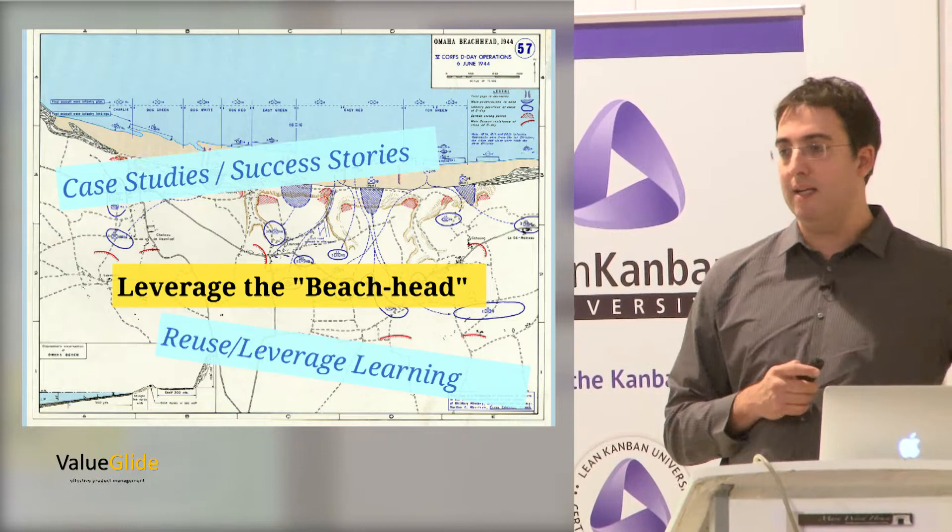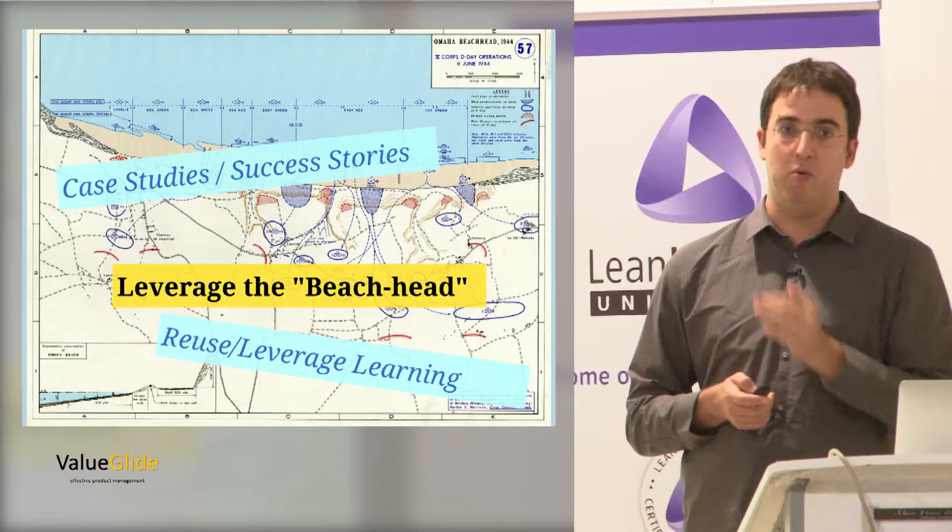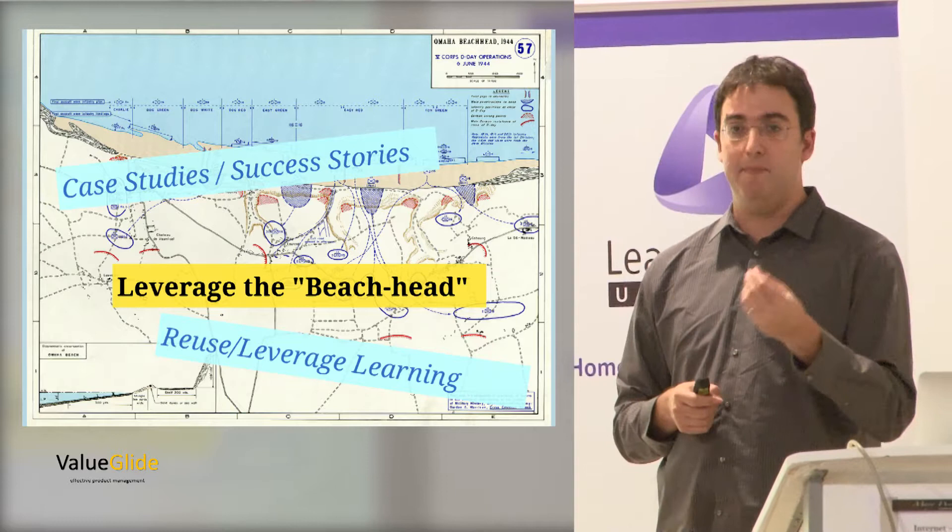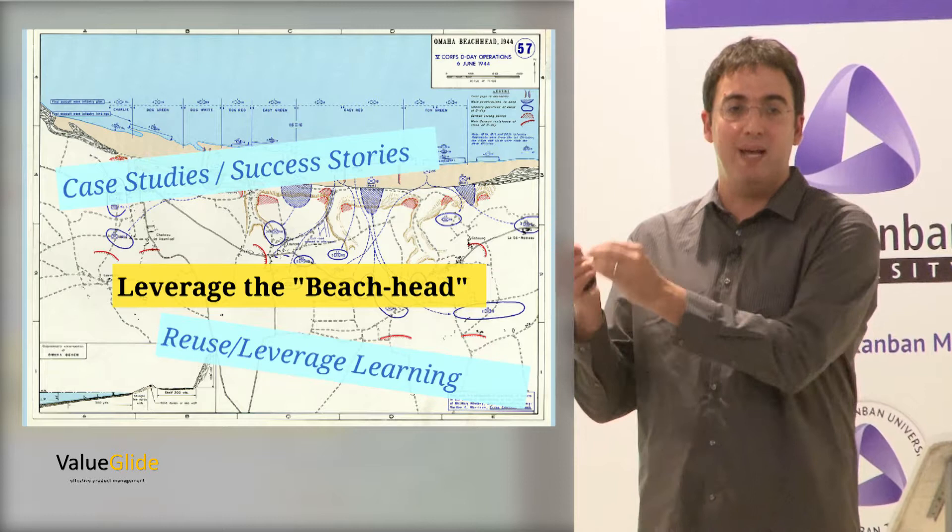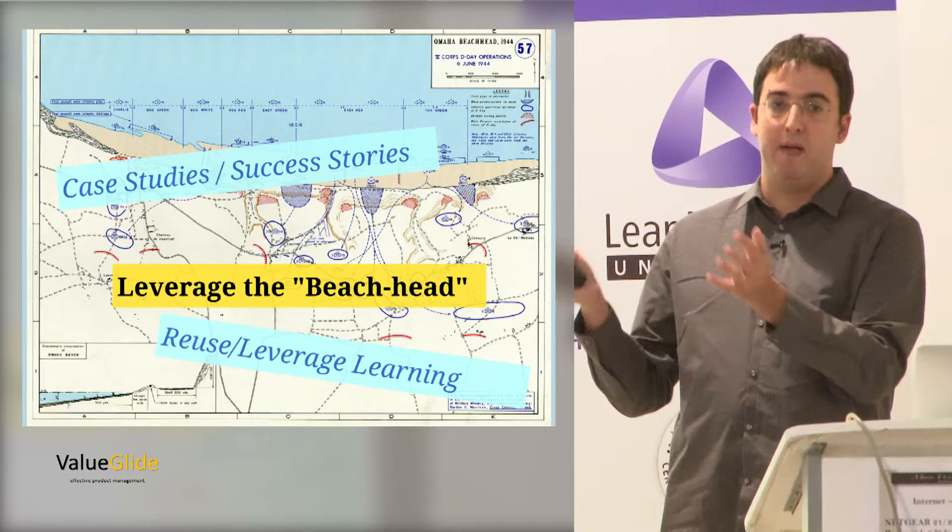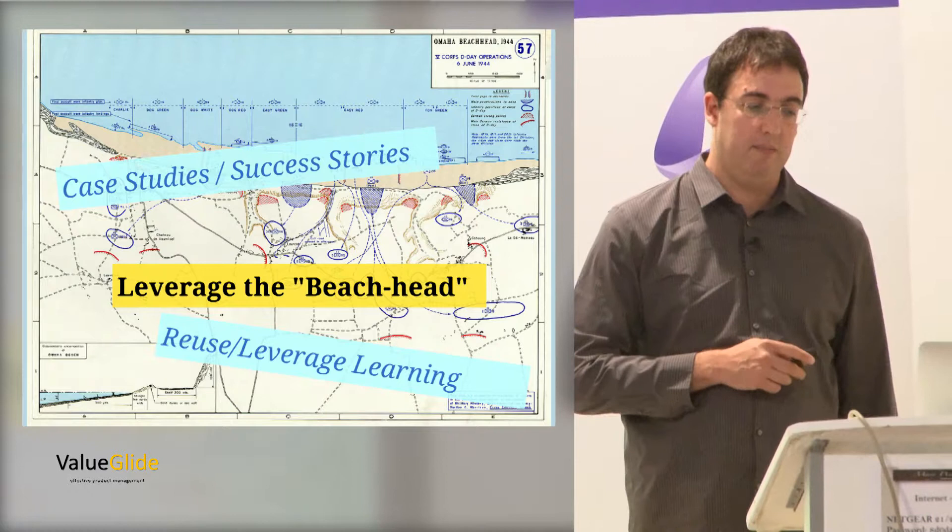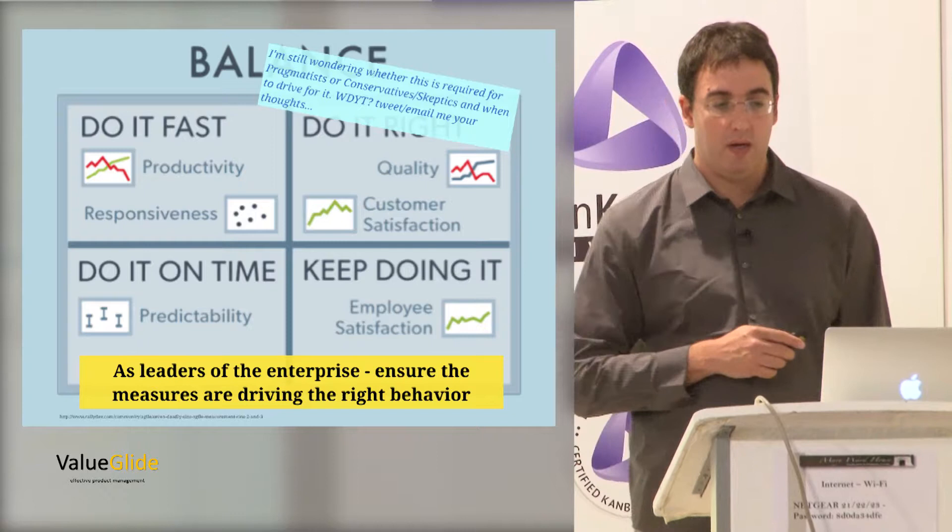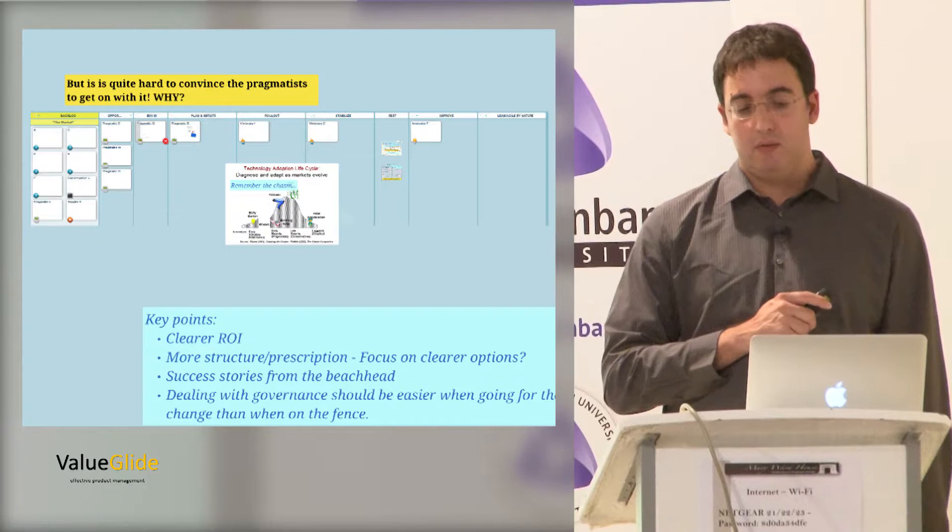So at this point, what you need to do, beyond some sort of prescription that is good enough and minimum enough to work for those people, use success stories. Create a beachhead, for example, of all of the projects. We have some success in projects that are doing maintenance. Let's leverage that, create a success story of that, and engage more people that are doing maintenance. Then go to maybe the new product development projects or groups in the organization.